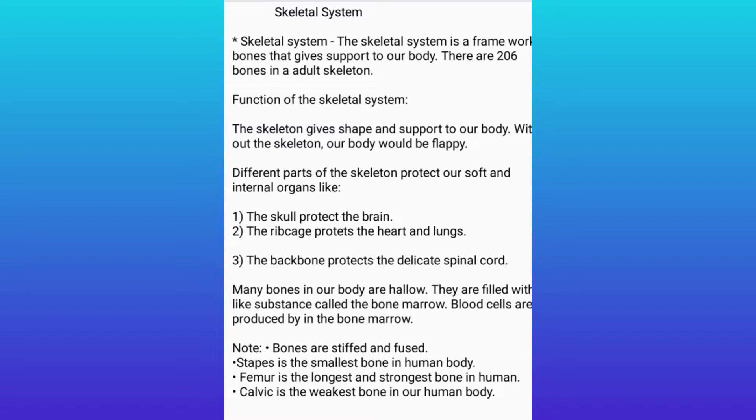Different parts of the skeleton protect our soft and internal organs. The skull protects the brain, the ribcage protects the heart and lungs, and the backbone protects the delicate spinal cord.